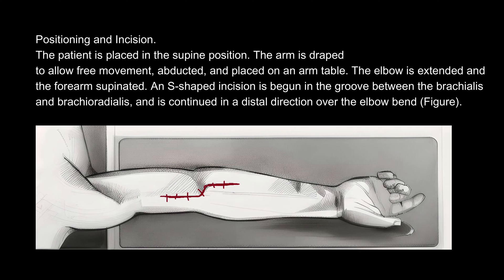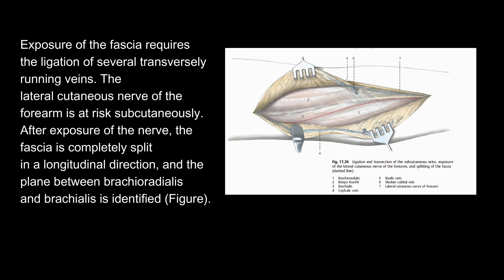the forearm supinated. An S-shaped incision is begun in the groove between the brachialis and brachioradialis and is continued in a distal direction over the elbow bend. Exposure of the fascia requires the ligation of several transversely running veins.